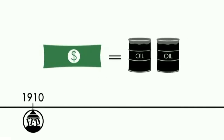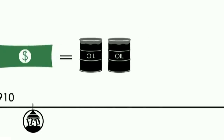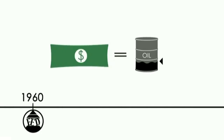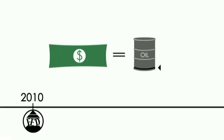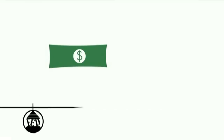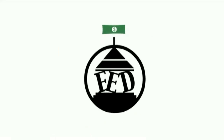A hundred years ago, when the Federal Reserve Bank was formed, a dollar would buy you this much oil. Fifty years ago, it bought you this much. Now, it buys you this much. That's not very much, is it? In fact, in the hundred years since the Federal Reserve Bank was formed to protect the currency, the purchasing power of the dollar has fallen by this much.